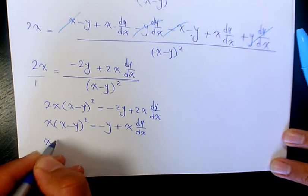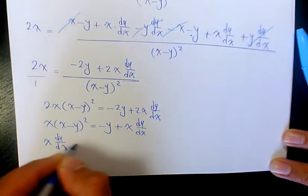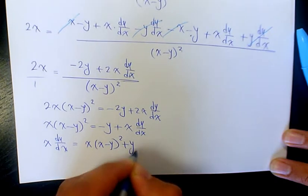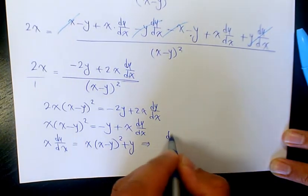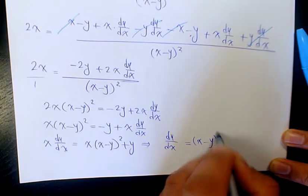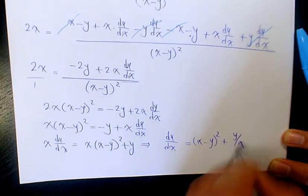So we're gonna say x times dy over dx equals to x times x minus y to the power of 2 plus y. Therefore dy over dx will be x minus y to the power of 2 plus y over x.